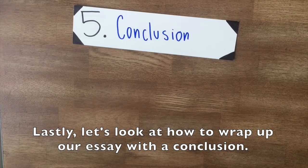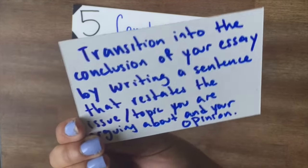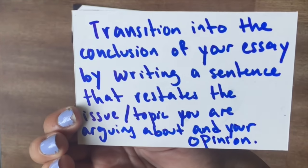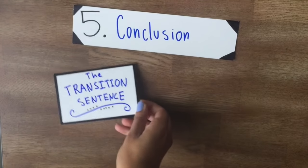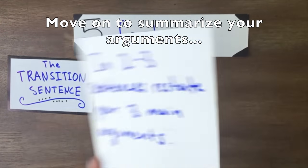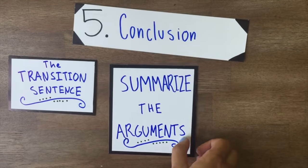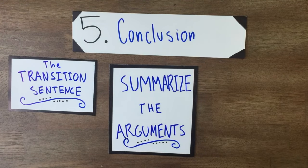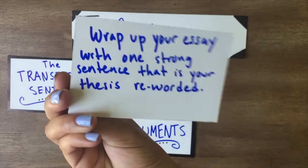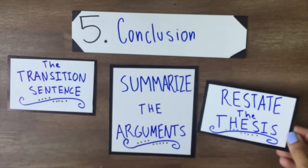Lastly, let's look at how to wrap up our essay with a conclusion. Transition to the conclusion by writing a sentence that restates the issue or topic that you're writing about and your opinion. Move on to summarize your arguments in two to three sentences that restate your three main arguments. Finally, restate your thesis — wrap up your essay with a strong sentence that is your thesis reworded.